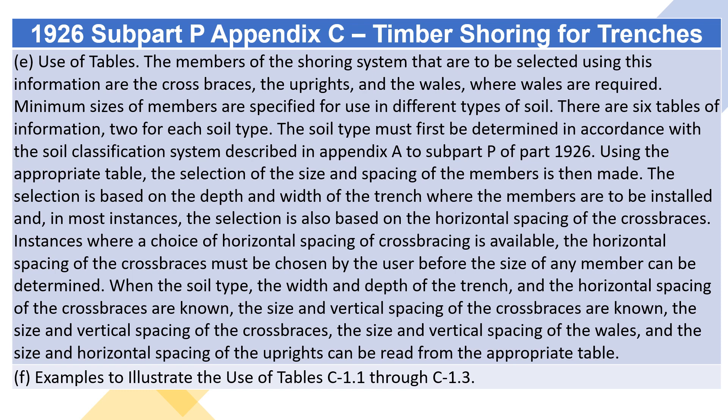Where a choice of horizontal spacing of crossbracing is available, the horizontal spacing of the crossbraces must be chosen by the user before the size of any member can be determined. When the soil type, the width and depth of the trench, and the horizontal spacing of the crossbraces are known, the size and vertical spacing of the crossbraces, the size and vertical spacing of the whales, and the size and horizontal spacing of the uprights can be read from the appropriate table.